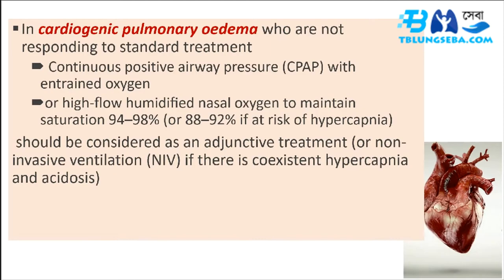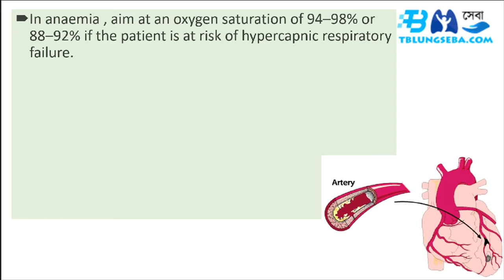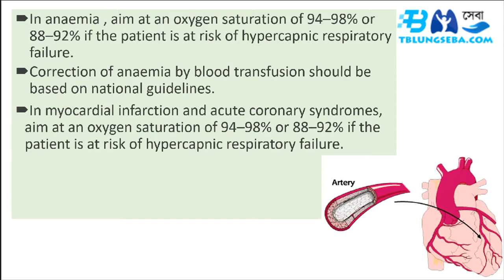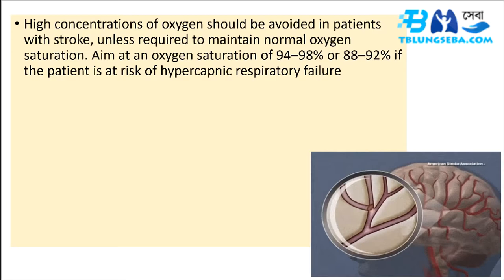In anemia, aim at 94 to 98% or 88 to 92% if at risk of hypercapnic respiratory failure; correction by blood transfusion should follow national guidelines. In myocardial infarction and acute coronary syndromes, aim at 94 to 98% or 88 to 92% if at risk of hypercapnic respiratory failure. High concentrations of oxygen should be avoided in patients with stroke unless required to maintain normal oxygen saturation.